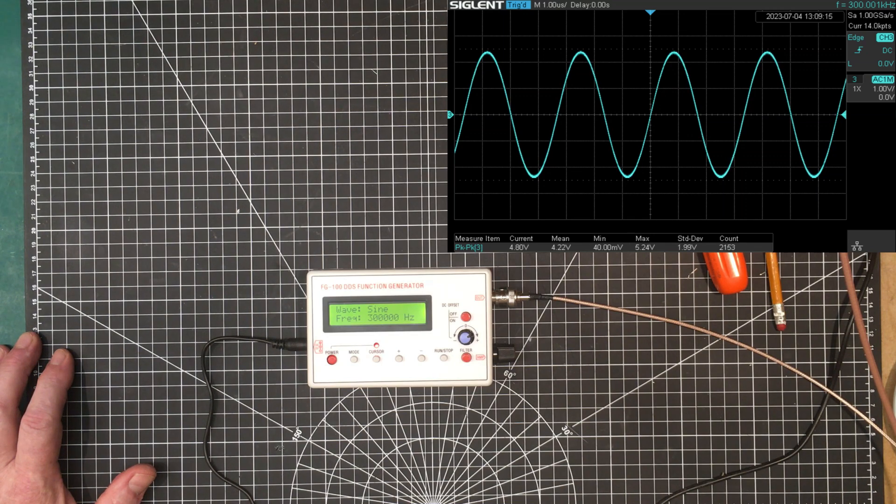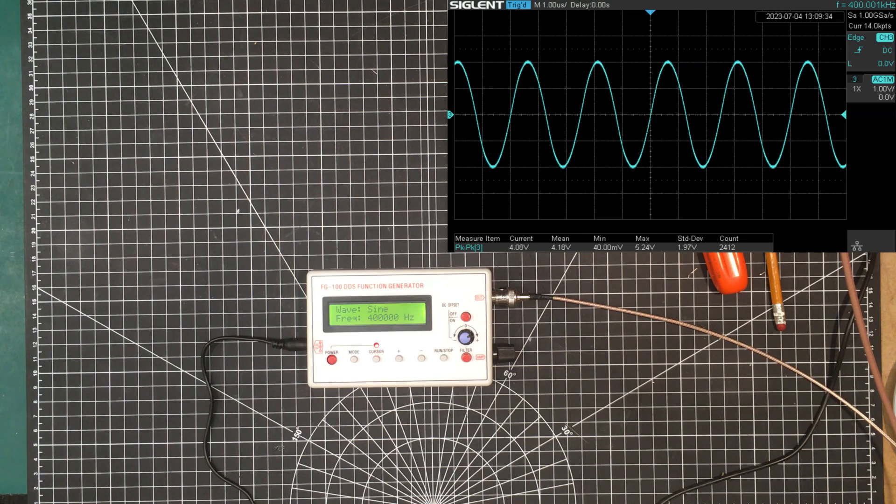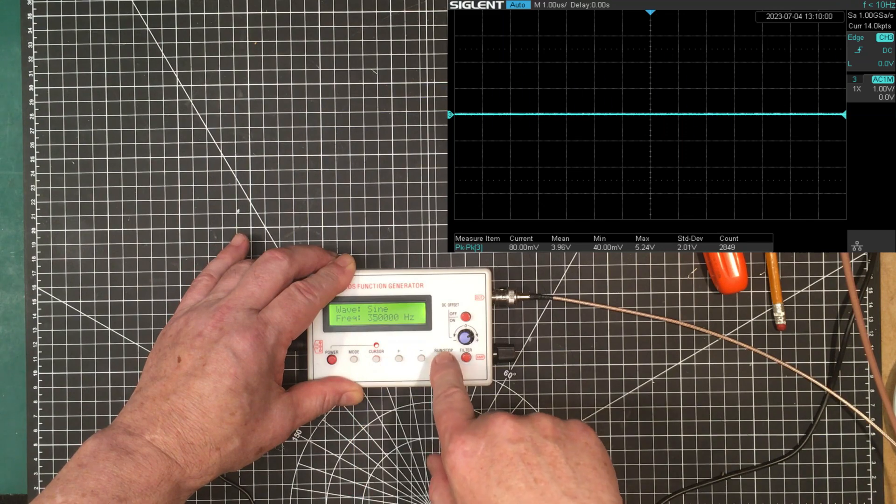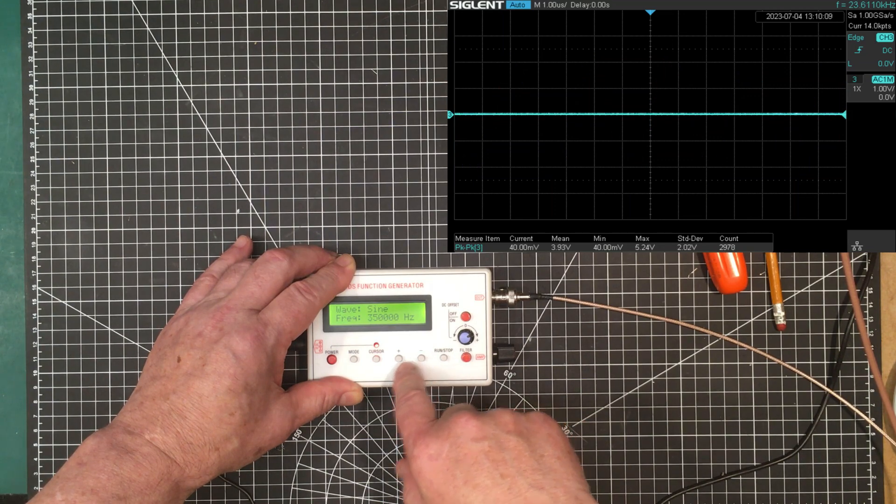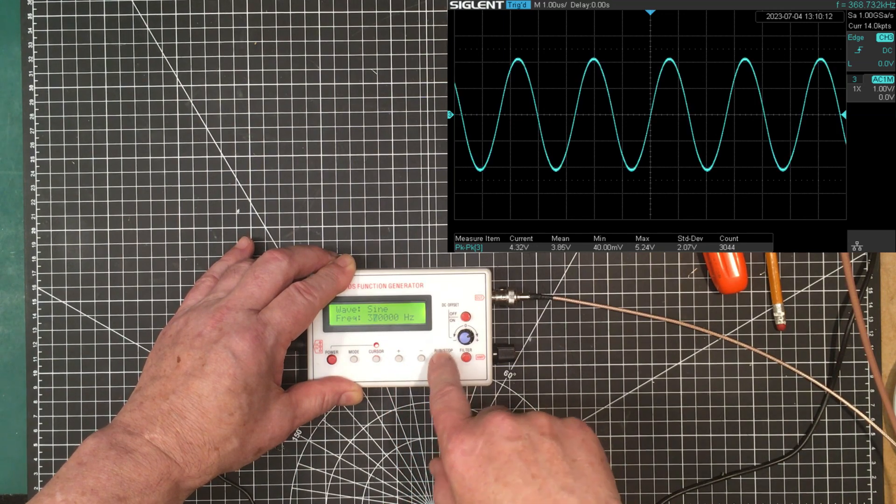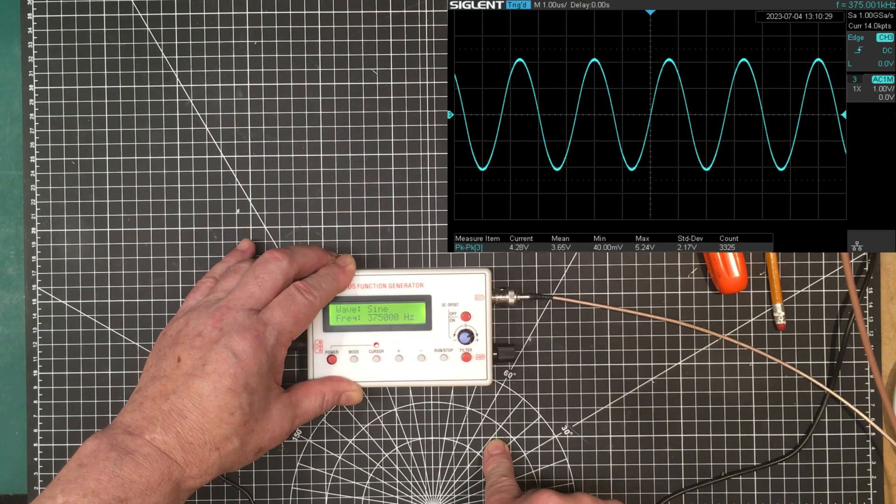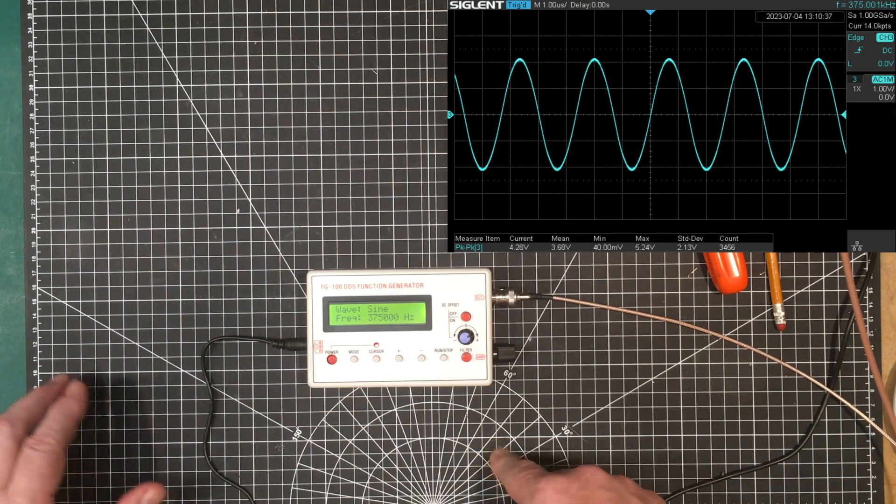Okay now we're down below the 3dB point but we still got a fairly decent looking sine wave. That's not too horrible. Let's back it off to 350 and see if that gets us closer to that 3dB point so we can just get a good idea of the actual bandwidth of this. Okay let's add a little bit more. I can go one more there. 375 kilohertz, there we are. Okay so now we're at the 3dB point. So up to 375 kilohertz and we still got a really nice looking sine wave. Let's check it out at 400 and 500 to see what we get.